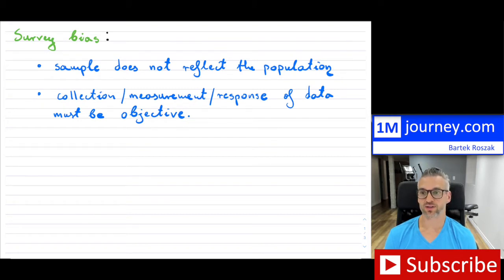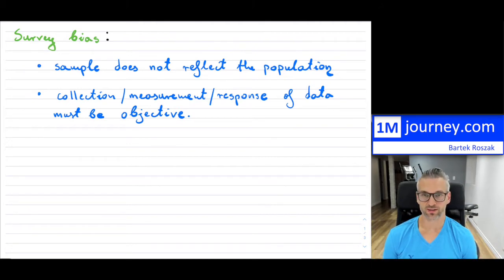What is this survey bias? Well, the goal ultimately is to take a sample that might properly represent the entire population for a given question. As soon as you do not reflect the population, you're going to have some kind of bias.